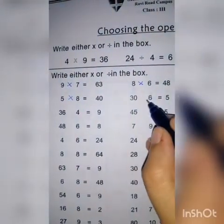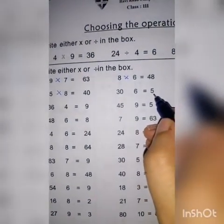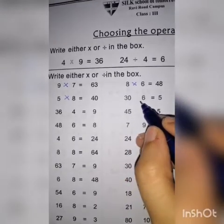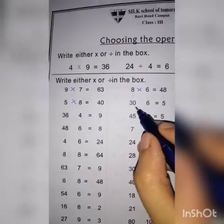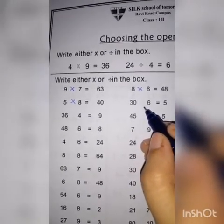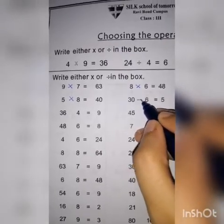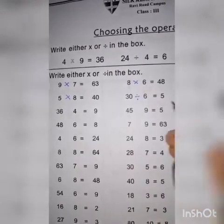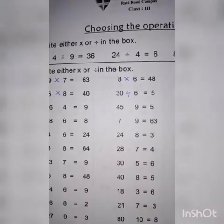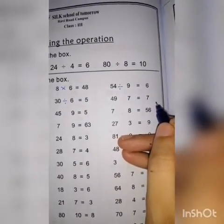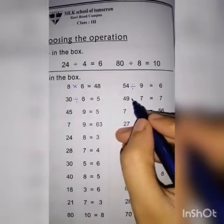اب 30 dash 6 equal to 5 — یہ بھی small answer ہے، اور 30 کو میں 6 پہ divide کروں گی۔ اگر میں multiply کروں گی تو 180 ہوتا ہے، لیکن یہاں divide کریں گے ہم۔ پھر دیکھیں 49 dash 7 equal to 7 — یہ بھی divide ہوگا۔